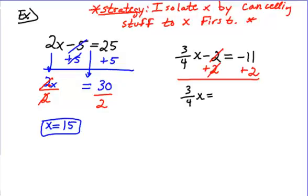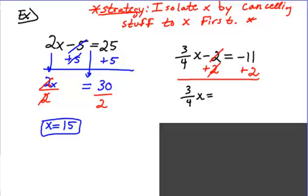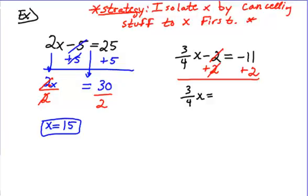Then I'm going to write down the stuff that was left. 3/4 x equals what's negative 11 plus 2? Negative 9? Yes. So we added 2 on both sides and got negative 9. Good, Carmelita.